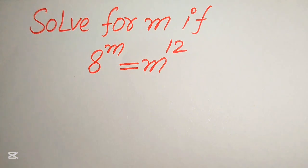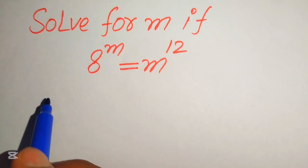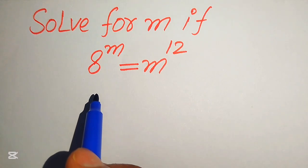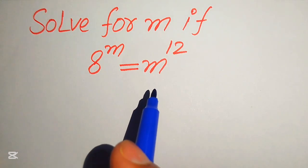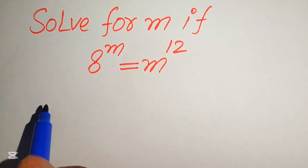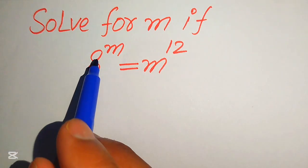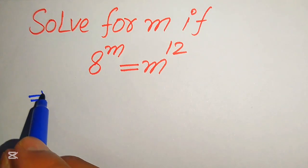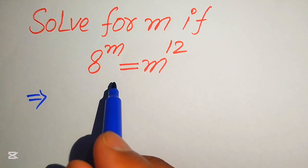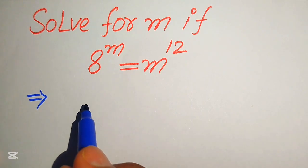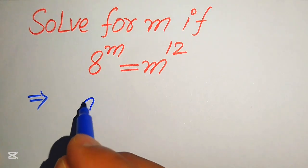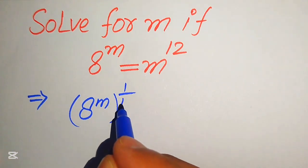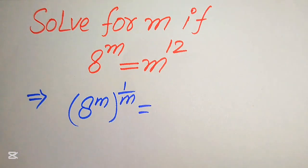The very first thing we are going to do is: our first target is to move the variable terms to the right hand side and move the constant term to the left hand side. For this we need to move this m to the right hand side, so we need to take the m-th root on both sides — in other words, take power 1 over m on both sides.